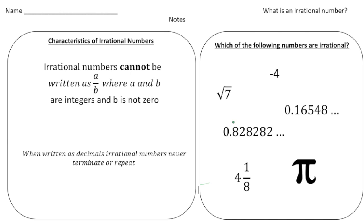So far you've learned what a rational number is, and remember a rational number is any number that can be written as a fraction where the fraction consists of integers. An irrational number is the opposite of rational. Here's the definition: irrational numbers cannot be written as a over b where a and b are integers and b is not zero.